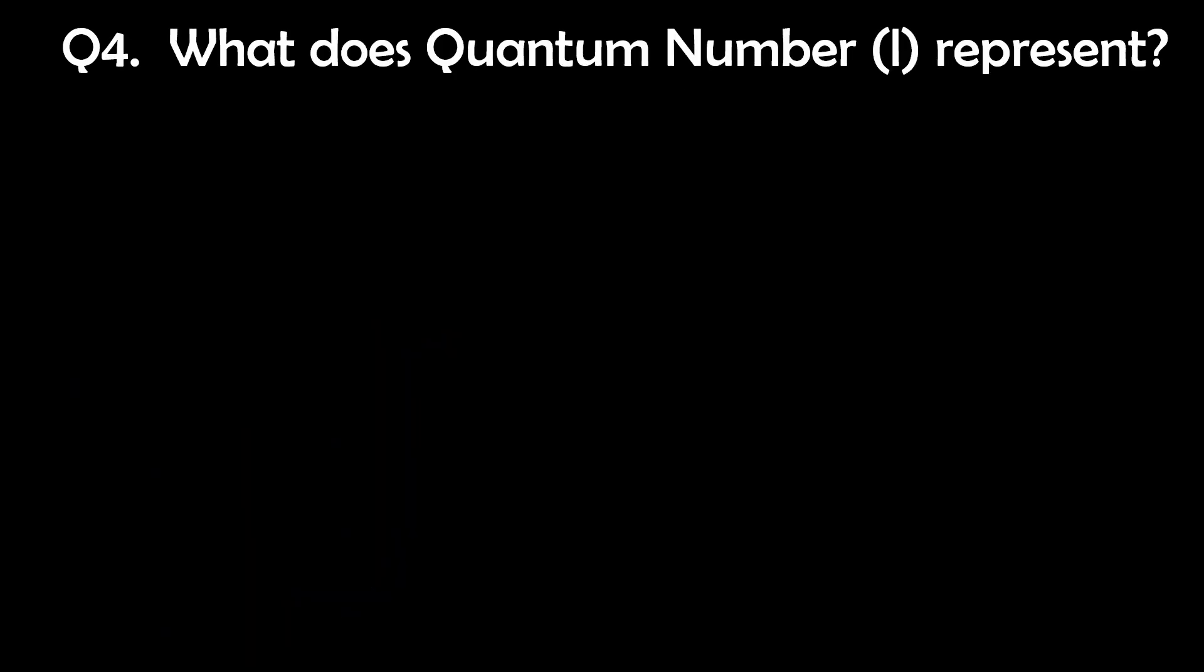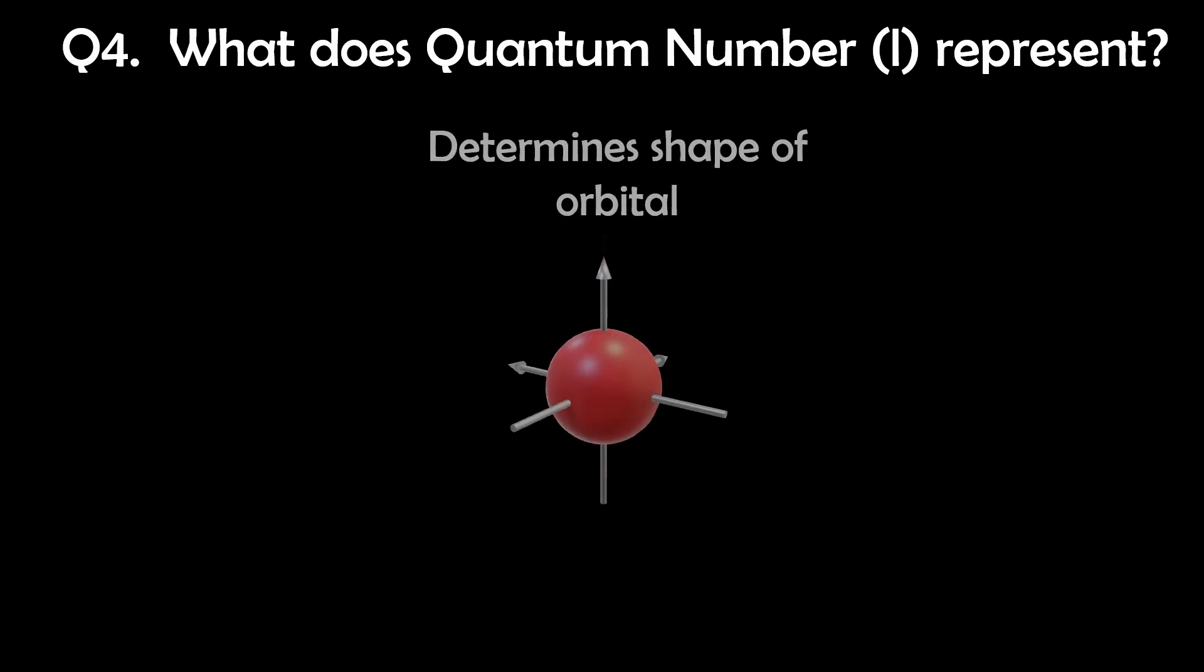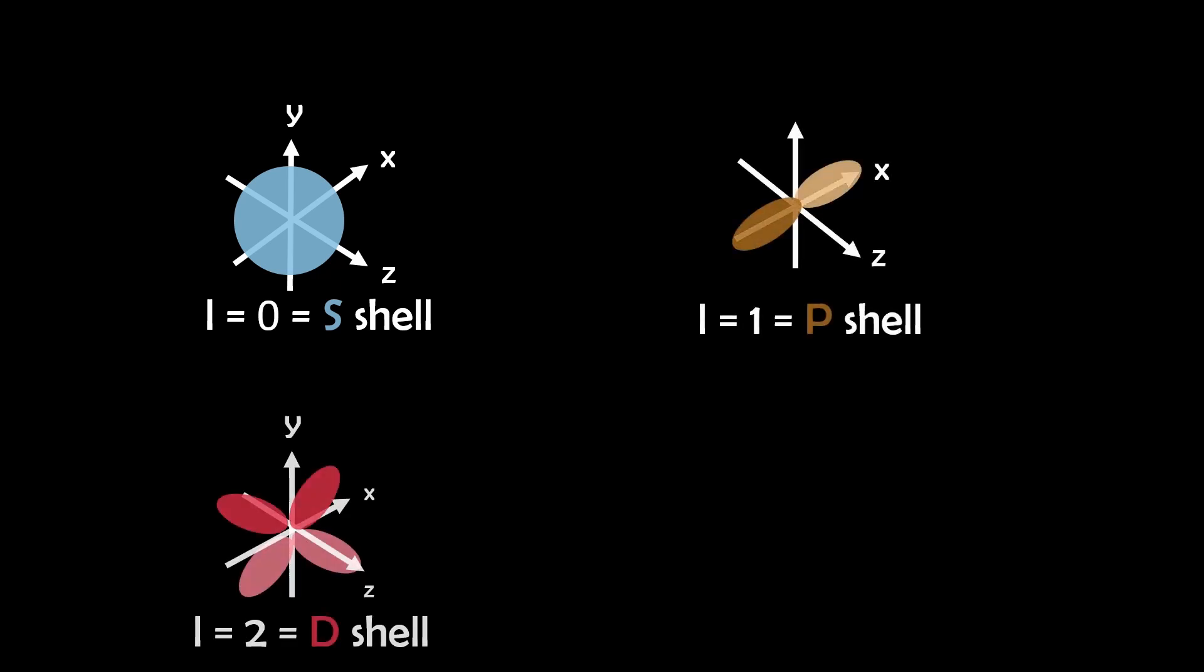Question 4. What does the quantum number L represent? The angular momentum quantum number determines the shape of the electron orbital. It can take values from 0 to N-1 for each principal quantum number N. The values of L correspond to different types of orbitals: 0 for S, 1 for P, 2 for D, and 3 for F orbitals.